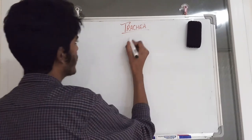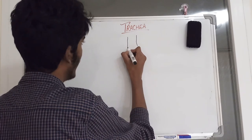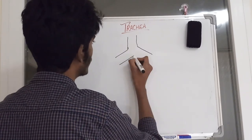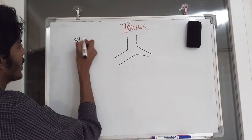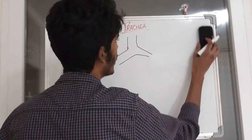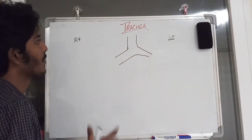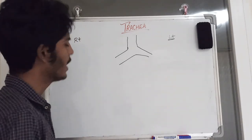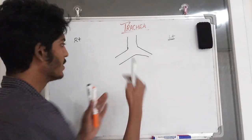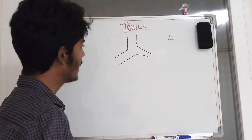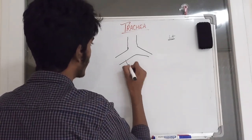The trachea divides at the angle of carina into the right and left primary bronchi. These two main bronchi — one on the right side and one on the left — are called the primary bronchi.